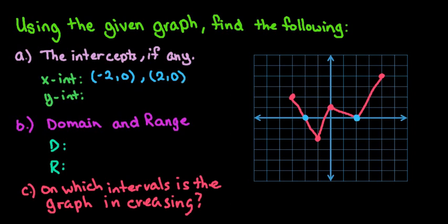The y-intercept is where it crosses the y-axis, so if we go to the y-axis we can see that it occurs when x is 0 and y is 1.